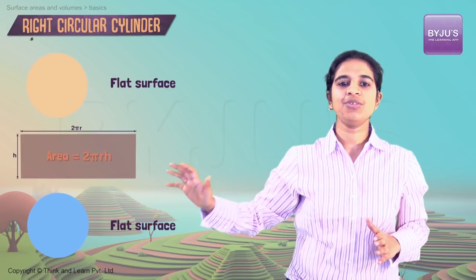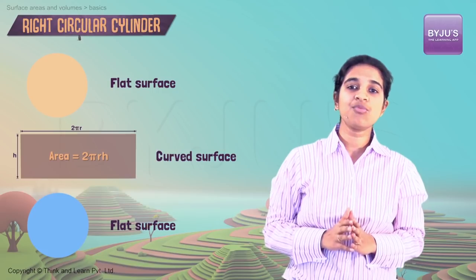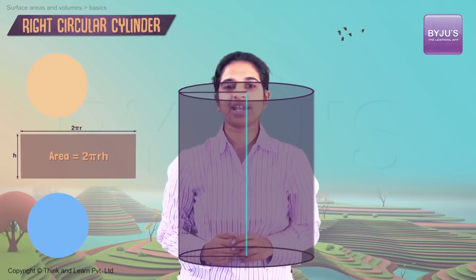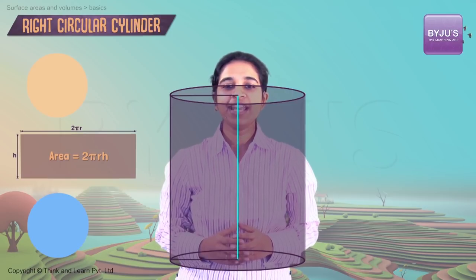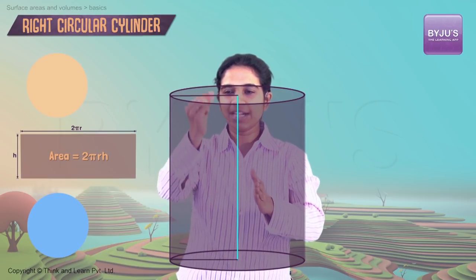There's another way to visualize this curved surface. Let's take a rectangle with width r and height h. Now take this as the axis and rotate the rectangle about this axis. What do you see? Looks like a cylinder, right? Looks exactly like a cylinder.